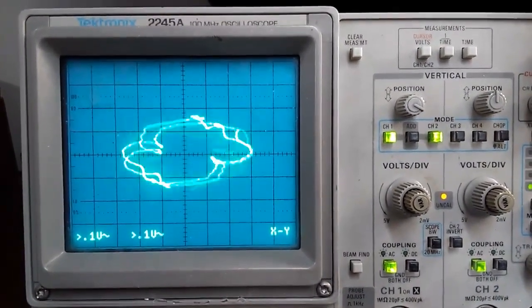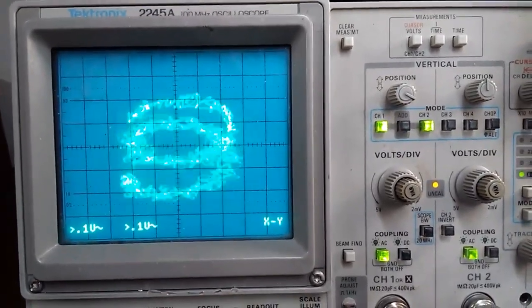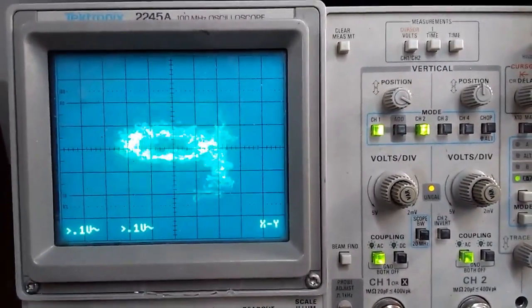Now we add a sawtooth waveform to the right channel. Our circle or ellipse turns into a spiral.